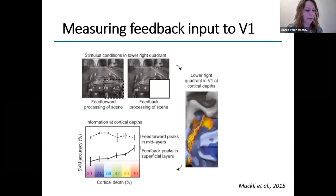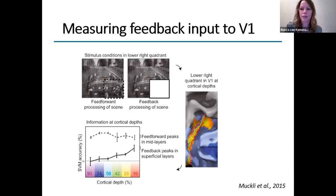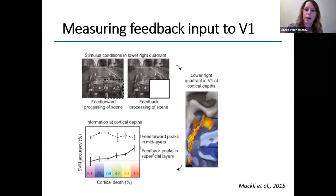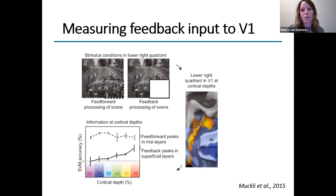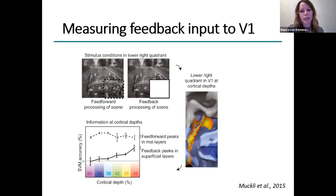As has later been shown, this was really suggestive of predictive signaling, because using high-field fMRI — in this case seven Tesla — we can actually see the different cortical layers. Feed-forward input arrives in middle layers, but feedback arrives in either the deeper or superficial layers. So you can use fMRI to really figure out what kind of information we're looking at. As they could find, these occluded or non-stimulated regions actually contain information in those feedback layers, supporting the idea that we're really looking at predictive information.